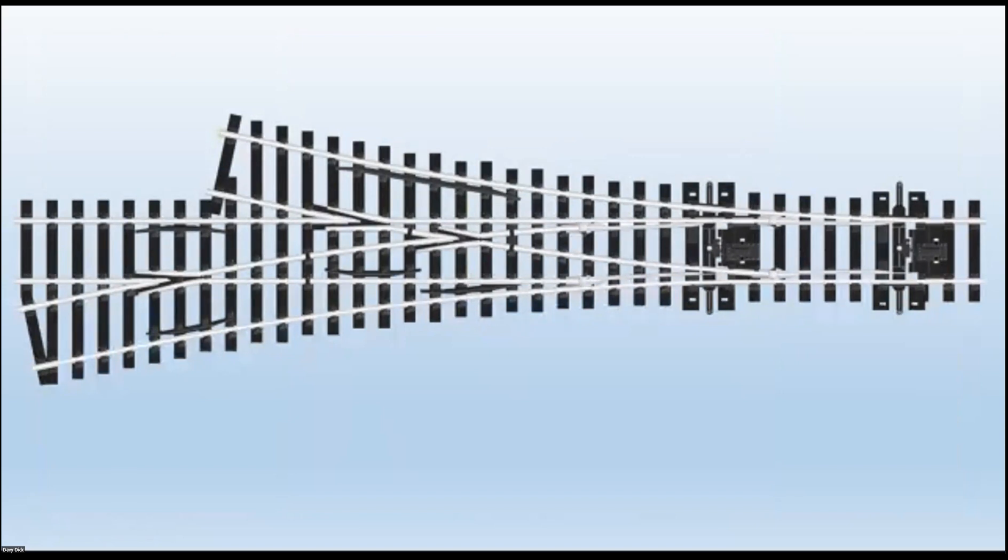That's the one we looked at previously, which is a Peco three turnout point, but it uses, as we discussed previously, two sets of point blades to get you there. So we needed two servos in order to move the two sets of blades.